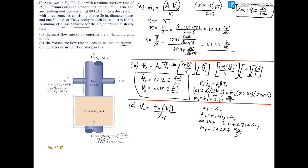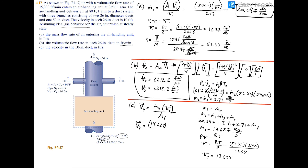Next we need the specific volume at 4. Using the ideal gas law rearranged as v4 = R·T4 / p4: that's 53.33 × 540°R / 2116.8 psf, which gives v4 = 13.605 ft³/lb. We can now plug into our velocity expression: V4 = ṁ4 × v4 / A4 = 14.627 lb/s × 13.605 ft³/lb divided by the area. Note: the unit written as kilograms per second should be corrected to pounds per second.